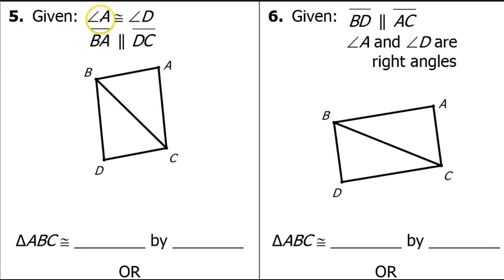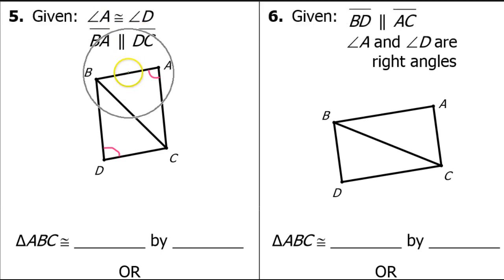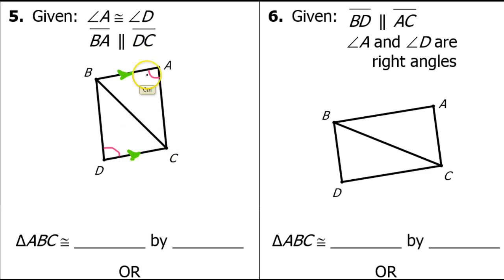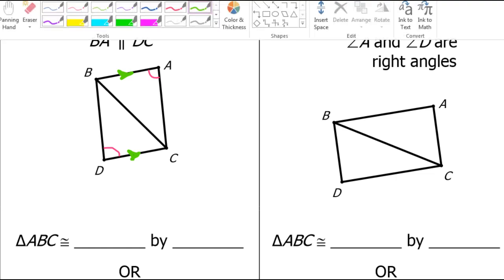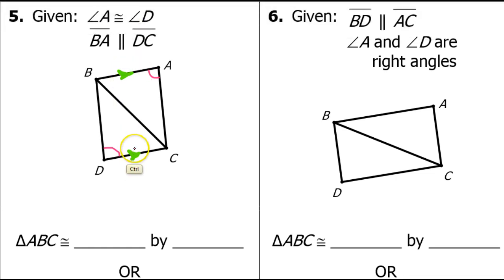In number five, we are told that angle A is congruent to angle D, and that BA is parallel to DC. Now please be careful — these sides are parallel, they are not congruent. So a lot of students, as soon as they see a parallel mark, think those sides are congruent. These marks mean parallel, not congruent. When deciding that the triangles are congruent, these parallel marks do not count as one of the S's. However, parallel sides lead to congruent angles — they don't give you congruent sides.